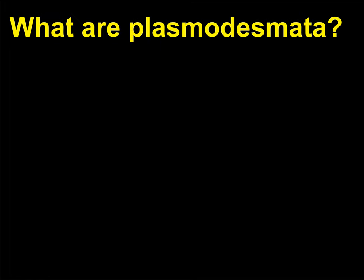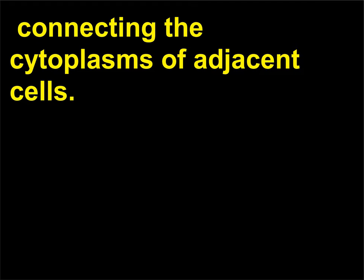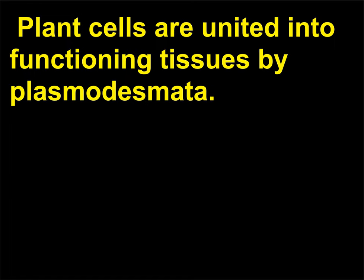What are plasmodesmata? Plasmodesmata are present in plant cells; they are channels or canals that occur in the cell wall, connecting the cytoplasms of adjacent cells. They allow molecules direct communication through adjacent cells. Plant cells are united into functioning tissues by plasmodesmata.